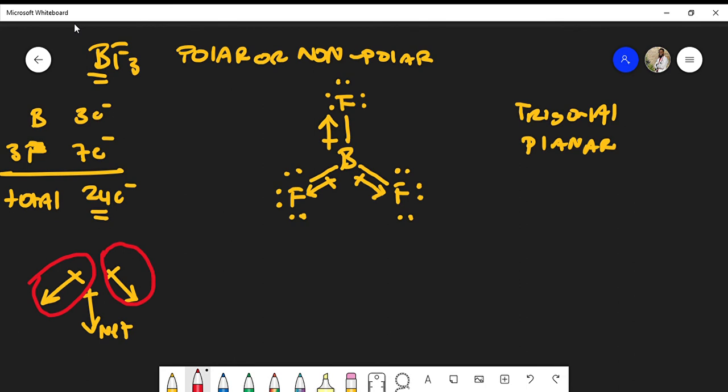What do we see here? We actually see that the dipoles are going tail to tail and this just simply means that we have a net zero dipole moment. In other words, boron trifluoride is actually a non-polar molecule.